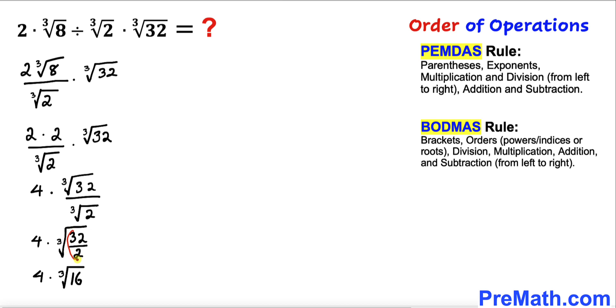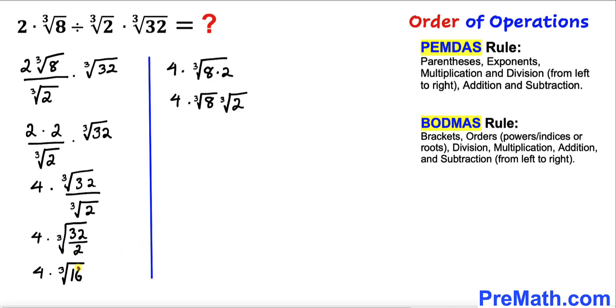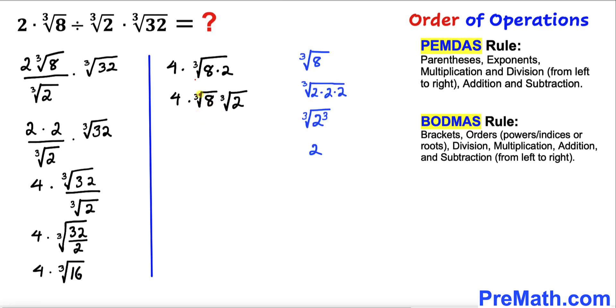And now 16 could be written as 8 times 2 and this could eventually be broken down into two cube roots as you can see. And now we know that the cube root of 8 is 2 as you can see over here, so therefore I have replaced this cube root of 8 by 2 in this next step.